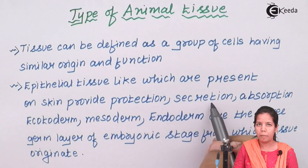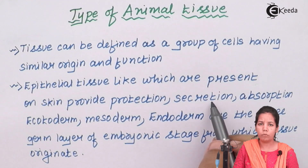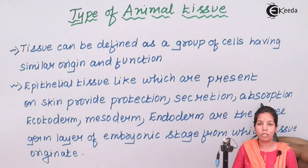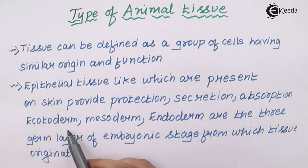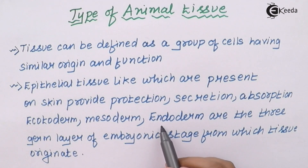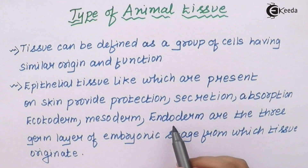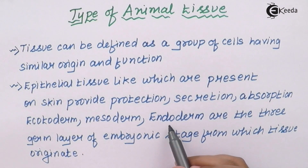Epithelial tissue present in the inner lining of your nasal cavity, throat, and intestine secretes mucus and certain substances. For absorption, epithelial lining is present inside your stomach. Now endoderm, ectoderm, and mesoderm are the three germ layers of the embryonic stage. These three germ layers are formed when you were born — once fertilization takes place and the zygote is formed, three germ layers are formed: endoderm, ectoderm, and mesoderm. From these, your epithelial tissues and all animal tissues originate.